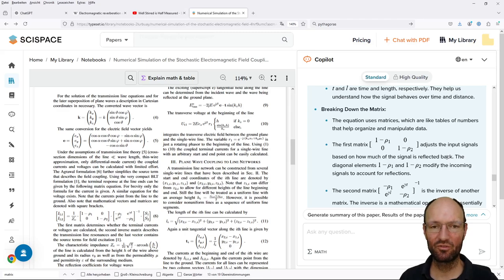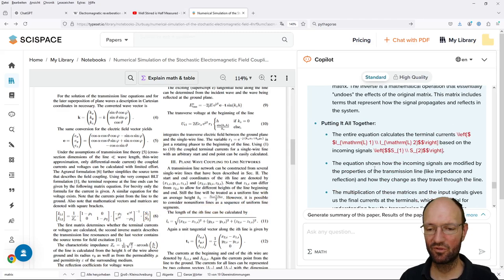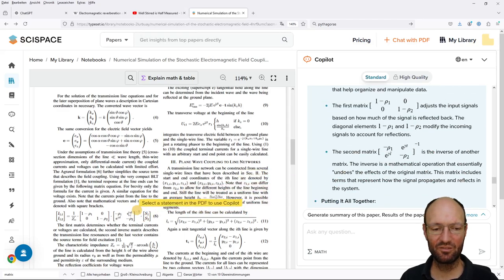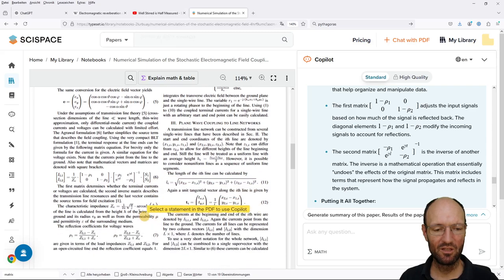I'm also not super satisfied with this answer because it forgot about the last term, and this is also not super correct. From my point of view, there's a much nicer explanation given here. The first term determines whether currents or voltages are calculated due to the different reflection coefficients. The second matrix calculates transmission line resonances. The last vector contains source terms.